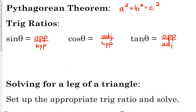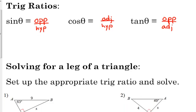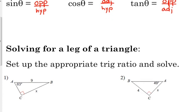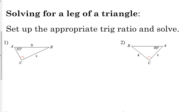What we're going to do, if we're only given one leg of our triangle, and we want to find another leg, then we need to figure out which trig ratio works. We're going to set that up, and then we're going to solve it.